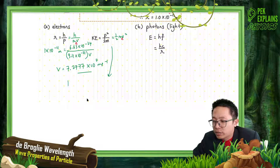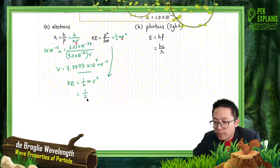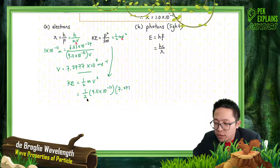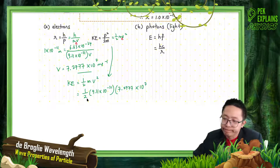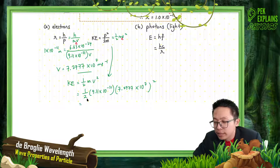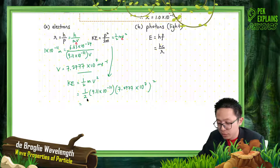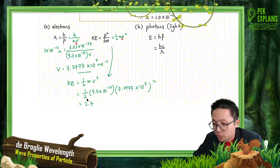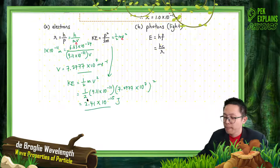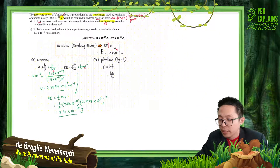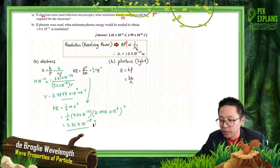Kinetic energy equals half mv². Use the mass of electron: 9.11×10⁻³¹. Velocity is 7.2777×10⁷, squared. So what is the kinetic energy? I'll square this and multiply by 9.11×10⁻³¹, divide by 2. The answer is 2.41×10⁻¹⁵ joules. That's the answer. Is that correct? Yes, that's correct. 2.41×10⁻¹⁵ joules.